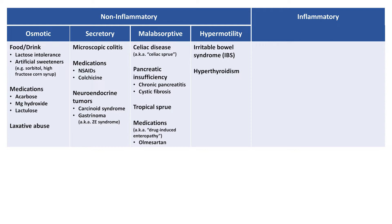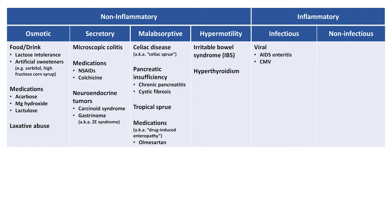Inflammatory diarrhea can be subdivided into infectious and non-infectious etiologies. Infectious etiologies include viruses such as advanced HIV and CMV, and mycobacteria such as tuberculosis and Mycobacterium avium complex. While conventional bacteria such as enteroinvasive E. coli are major etiologies of acute inflammatory diarrhea, these infections do not generally last more than several weeks.